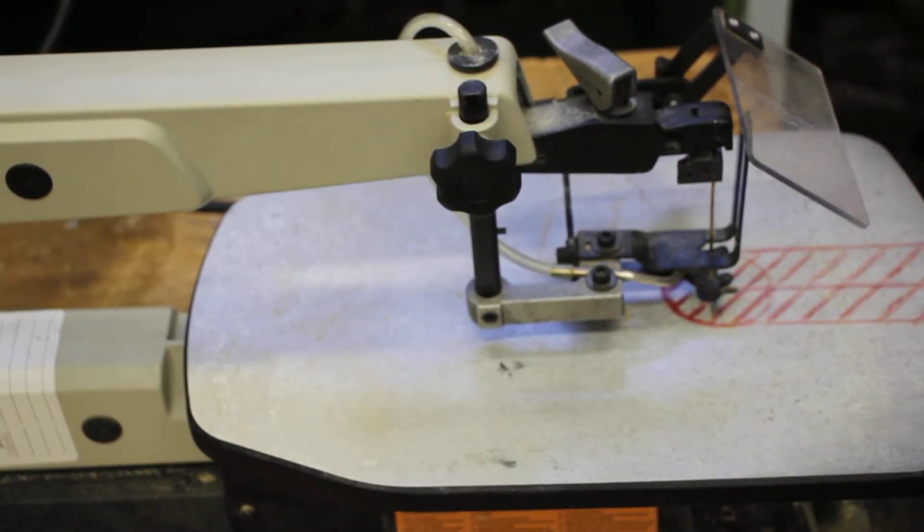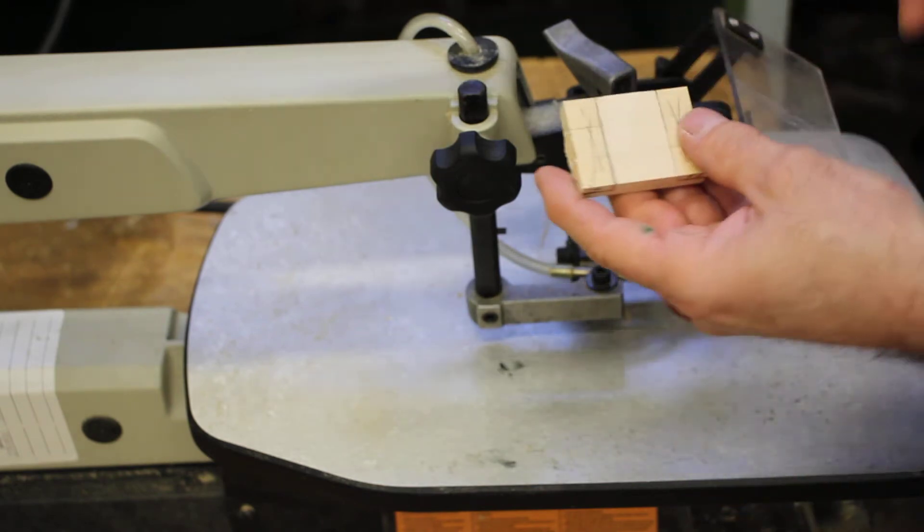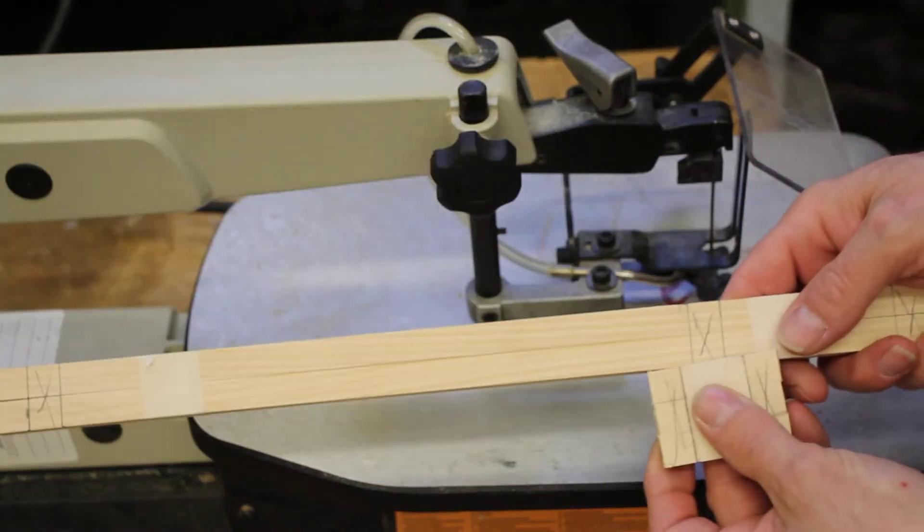Our next step is we're going to use a scroll saw to cut our pieces of wood in order for them to fit together to be a proper frame.